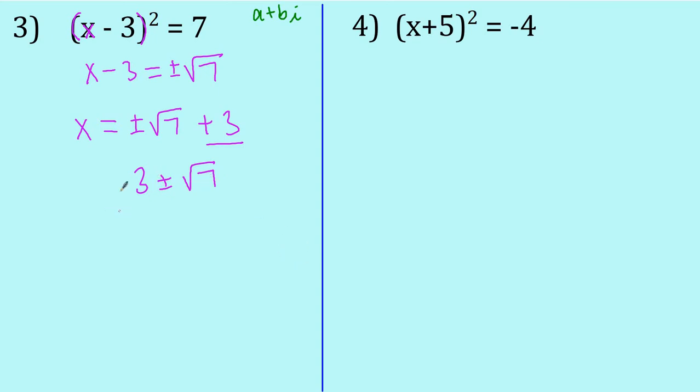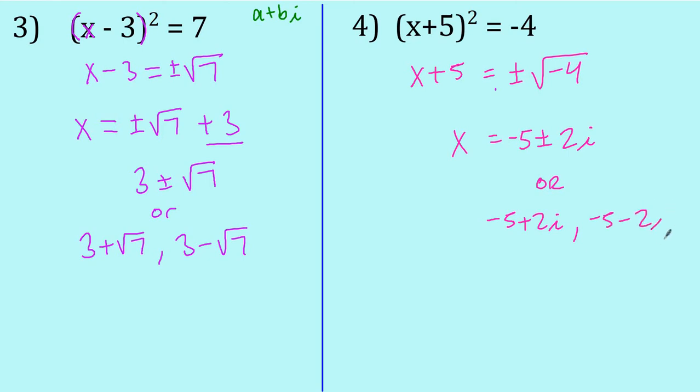So there's our two answers. Just like in 4.5, we had two answers, unless we had a repeated one. This is actually two answers. It's 3 plus the square root of 7 and 3 minus the square root of 7. So you can write it either or. Try number 4. All right, so the first thing I do is take the square root. So we put plus or minus. So then we can simplify that to plus or minus 2i. And we move the 5 over, so it becomes negative 5. So it's either this or you can write it as two answers, two separate, with a comma in between. There you go.